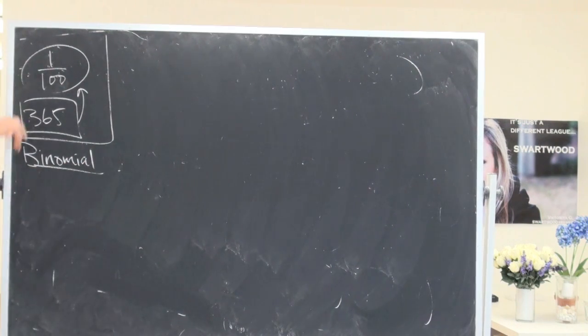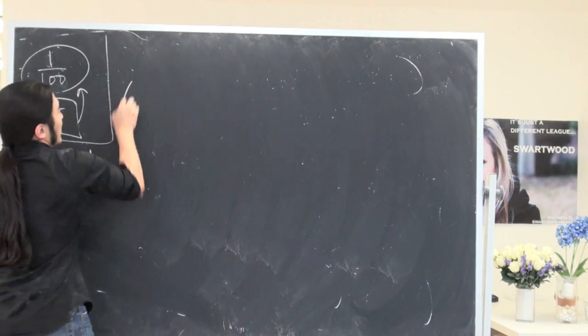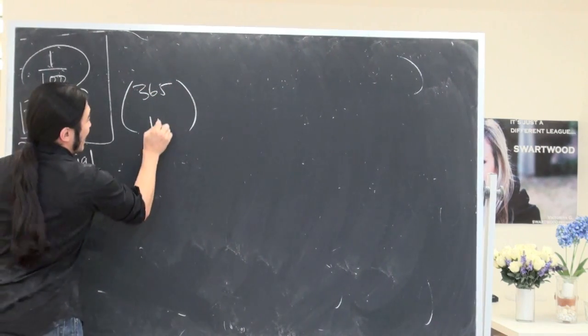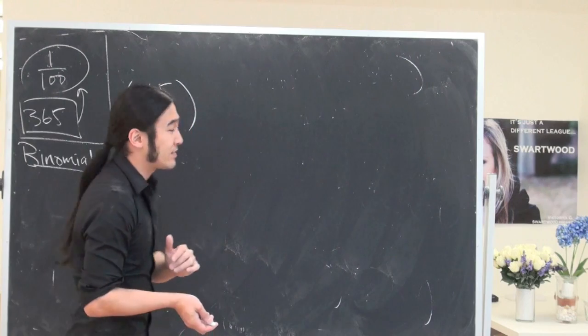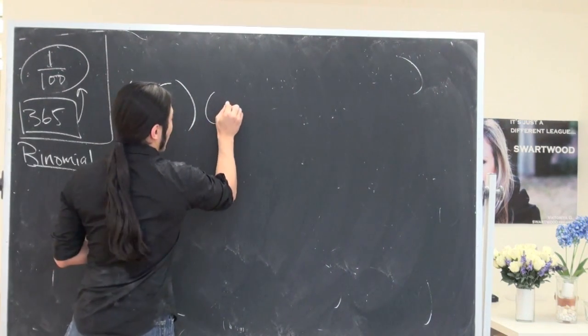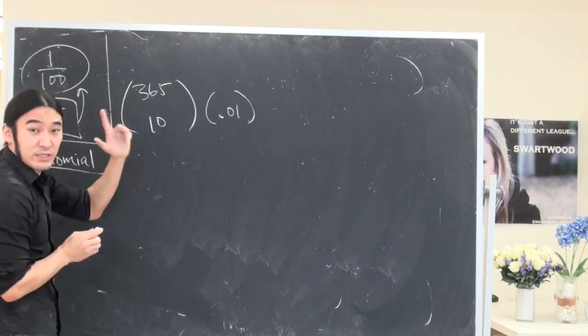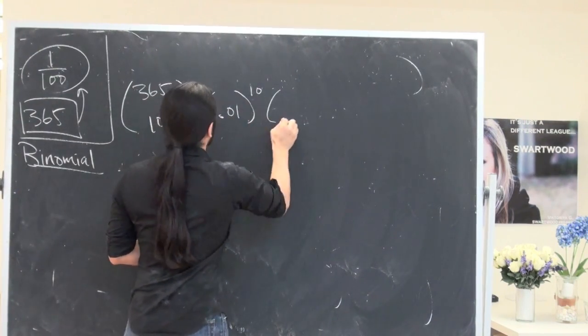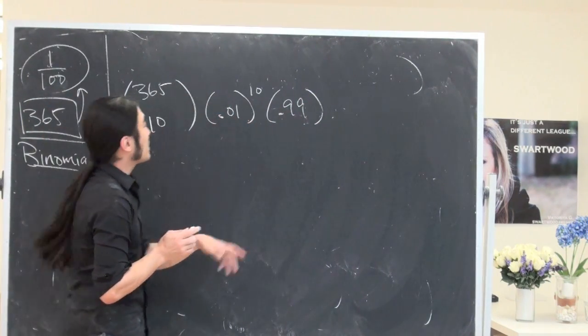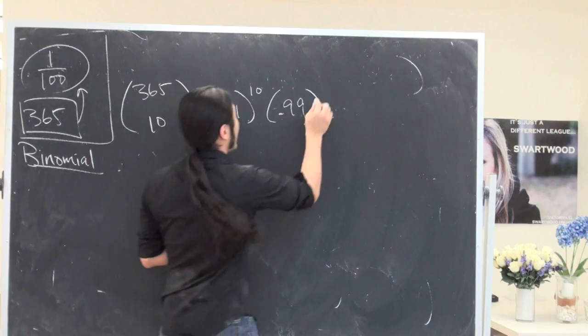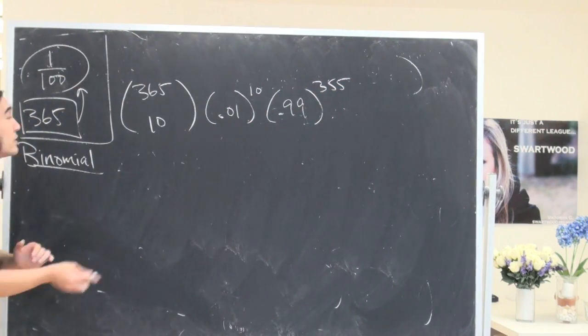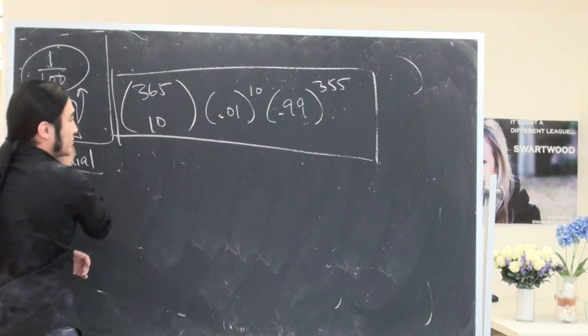We already know this is a binomial setup. So here's our setup. Out of 365 tries, you want to succeed exactly 10 times. The probability you win exactly 10 times: 365 choose 10. Probability success is like 1 out of 100. You want to succeed 10 times, but you fail 99% chance. So success, one minus success. Succeed 10, fail 355. That's the actual probability. The binomial distribution on this guy.